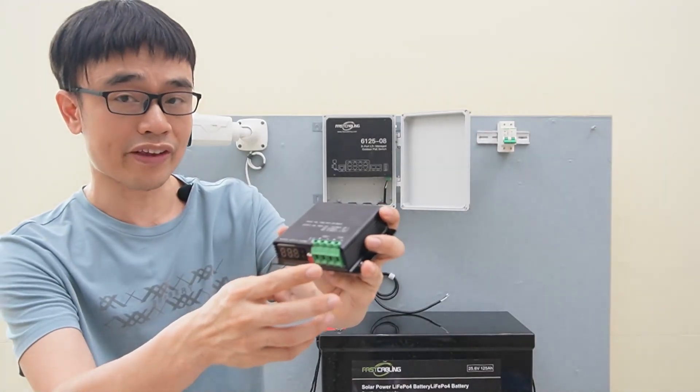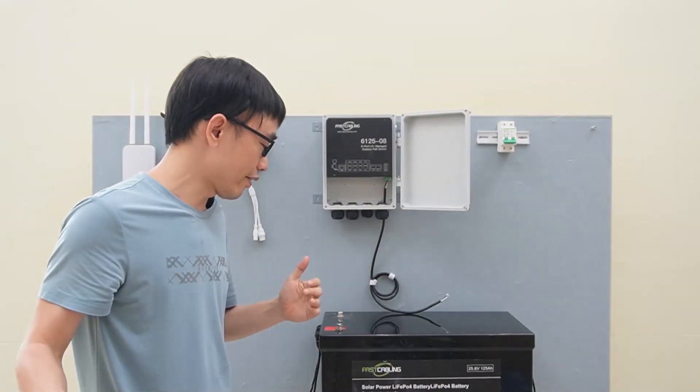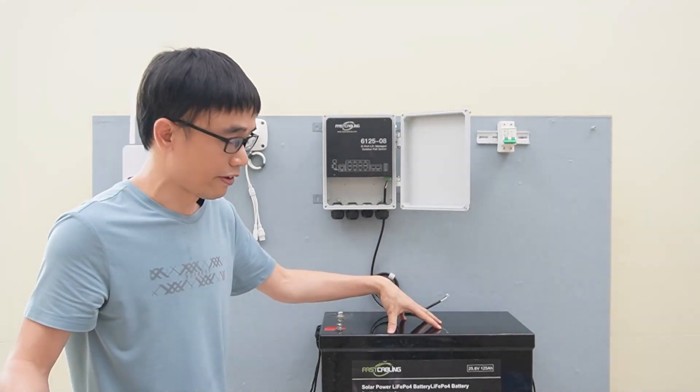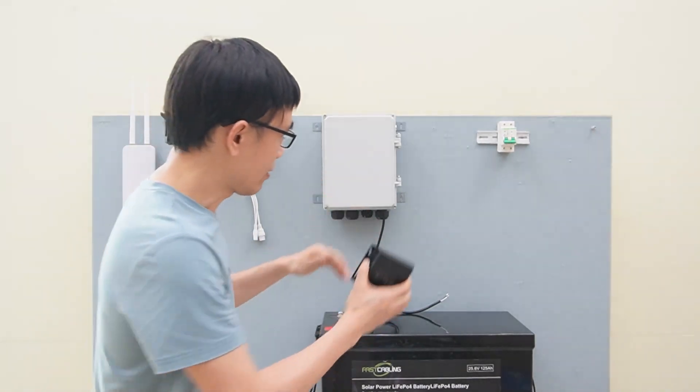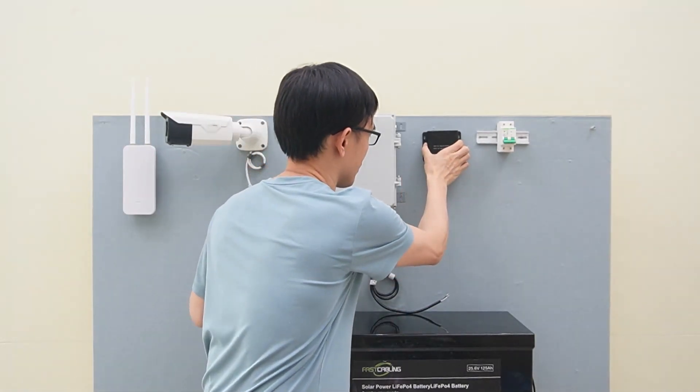Here we have the input and output. We are supposed to connect the input port to this lithium battery and connect the output port to this outdoor PoE switch. Now, let me attach this booster to the wall.